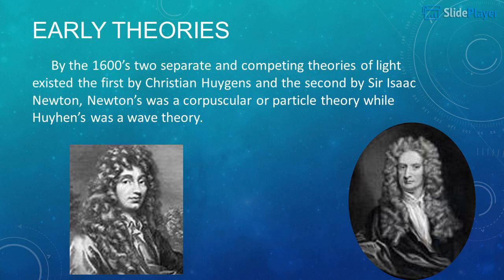Early Theories. By the 1600s, two separate and competing theories of light existed: the first by Christian Huygens and the second by Sir Isaac Newton. Newton's was a corpuscular, or particle, theory, while Huygens' was a wave theory.